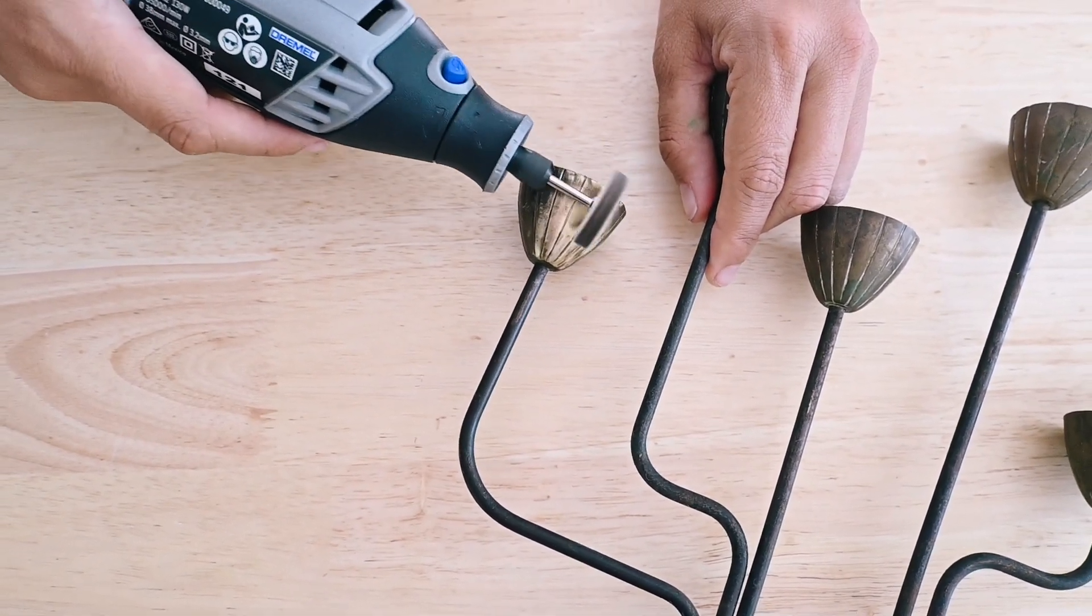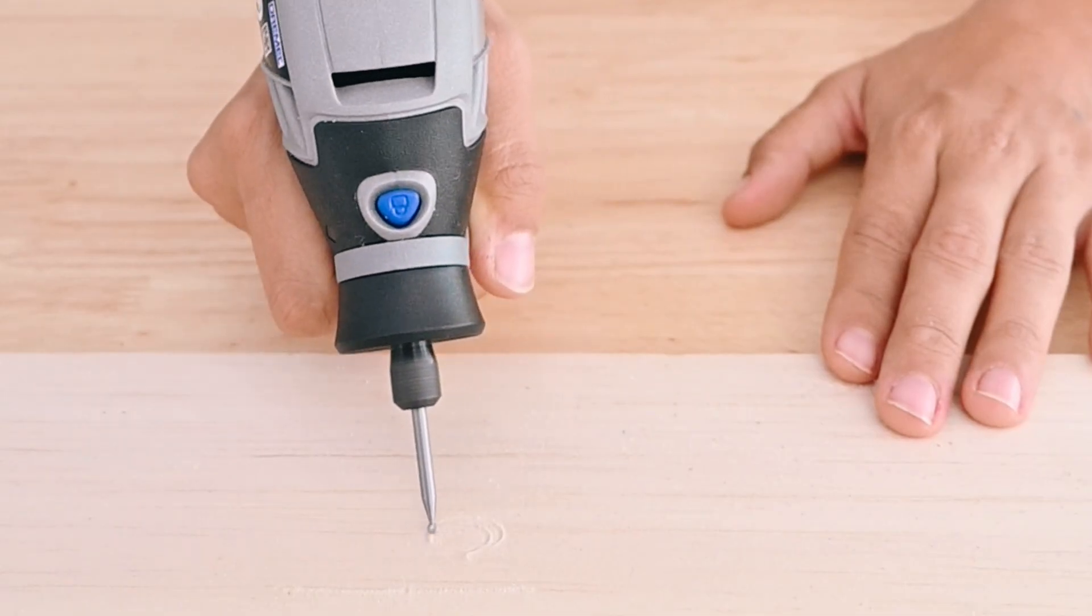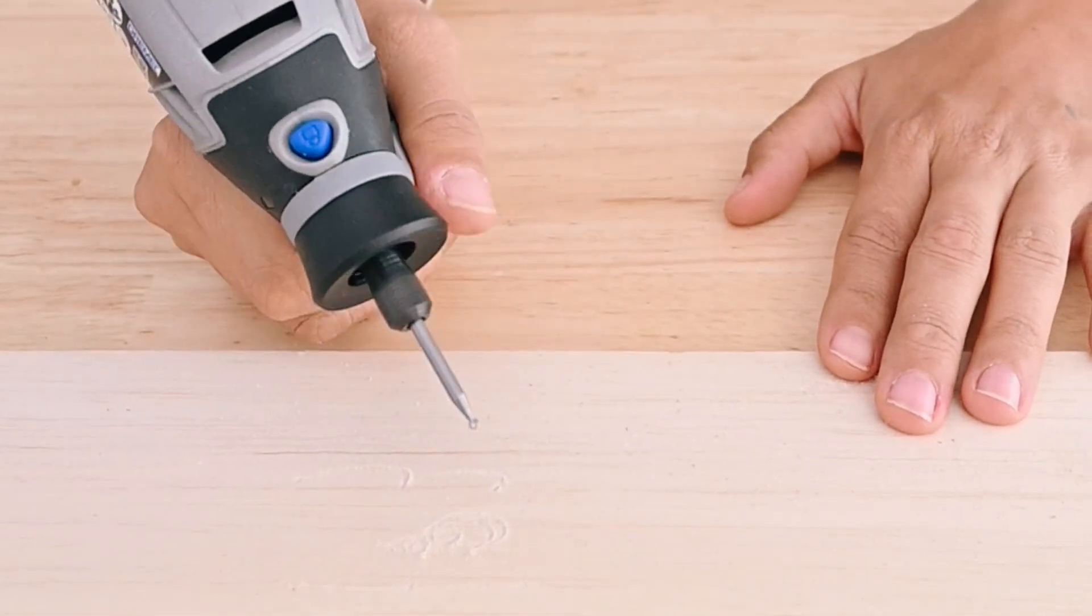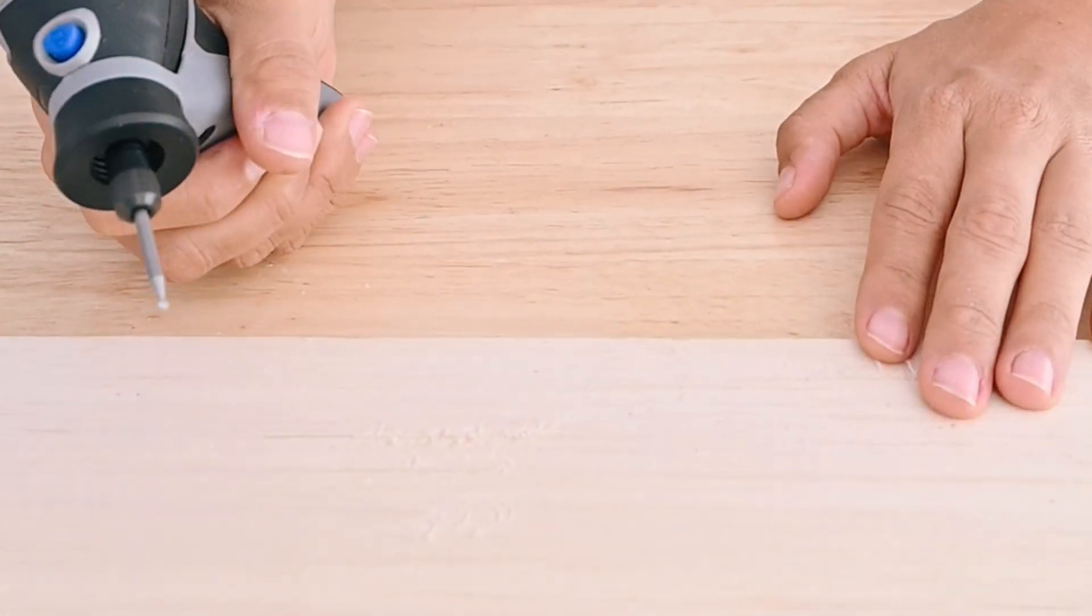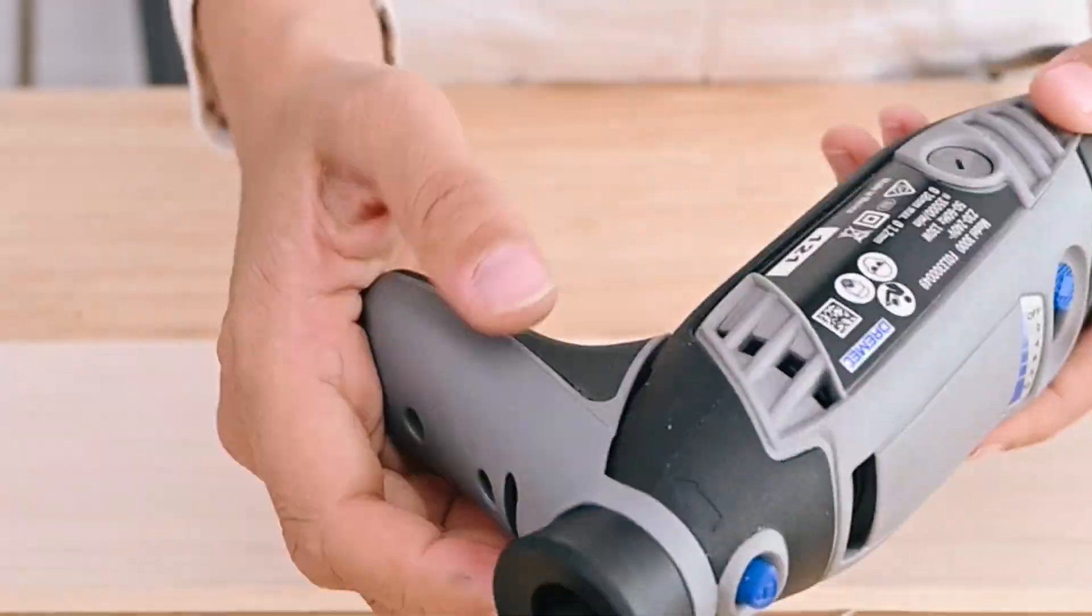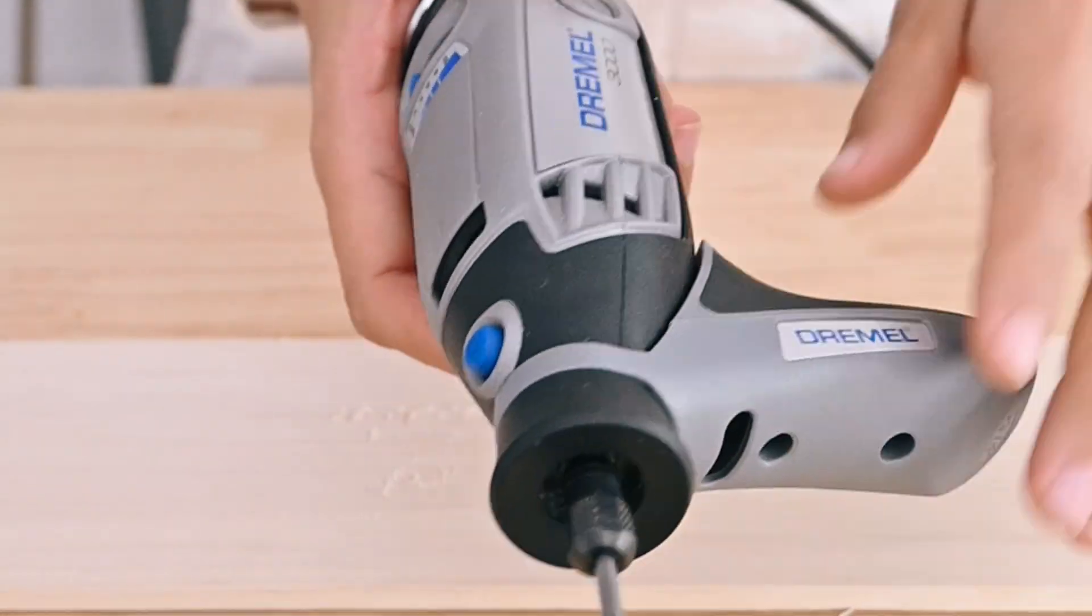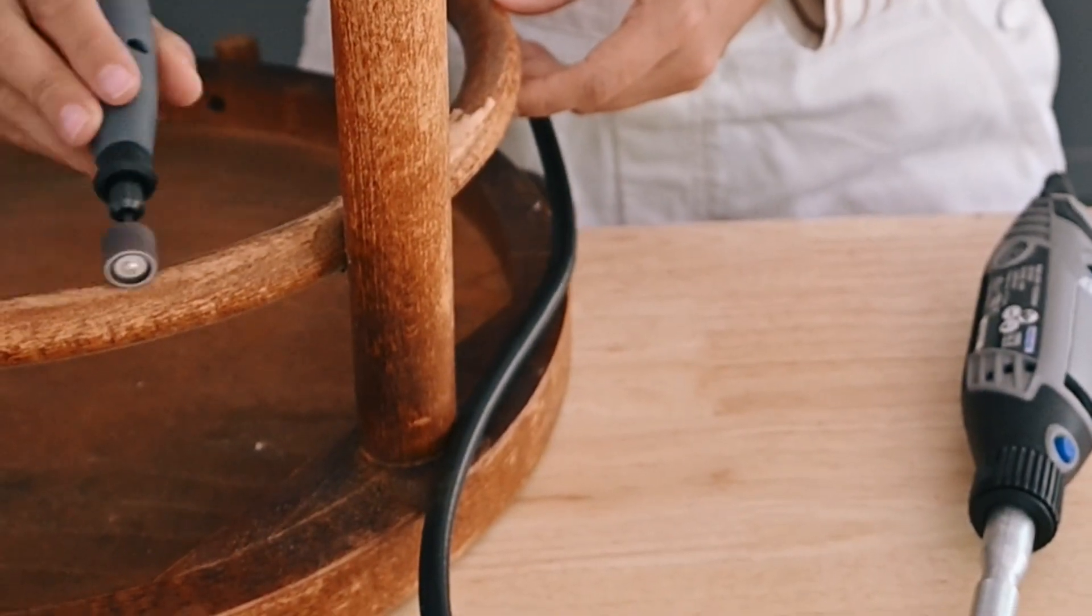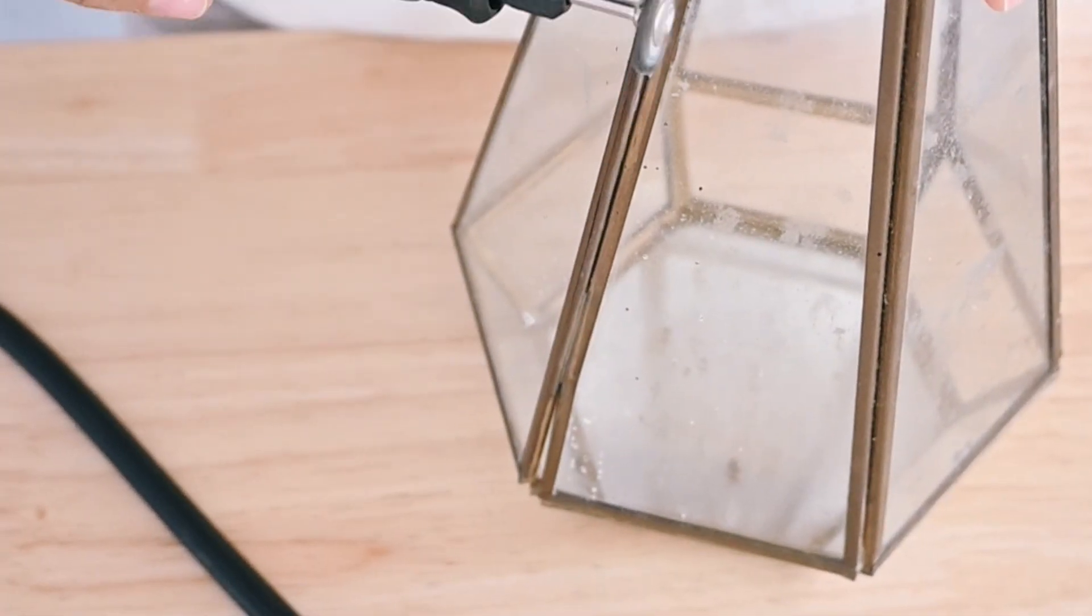In addition to all the fantastic accessories that allow you to do so many different projects with the Dremel, there are also some amazing attachments that you can use to make your projects more efficient or more detailed. The first one is this detailer's grip, which attaches to the base of the tool and allows you better control and to do more intricate projects. The next one is this flex shaft, which attaches to your tool to create a finger grip and better accessibility.